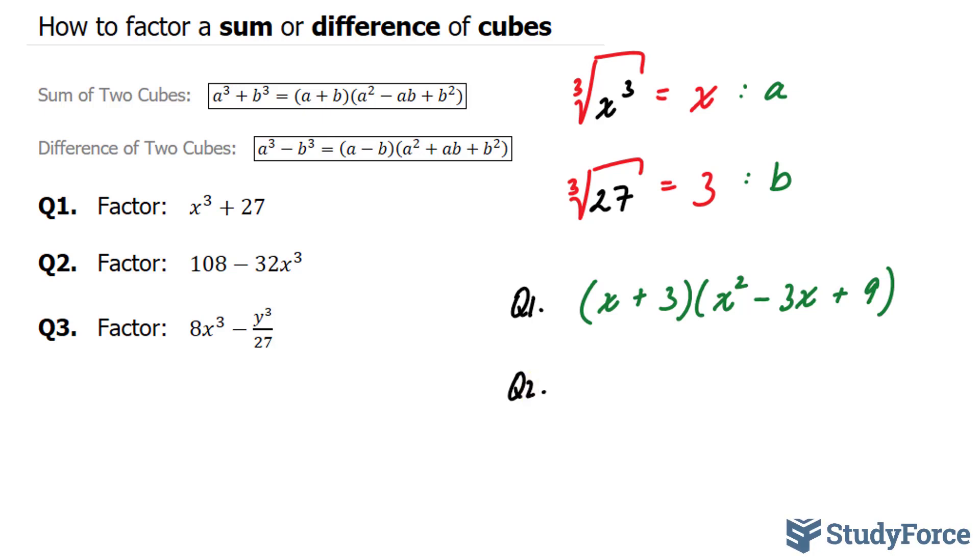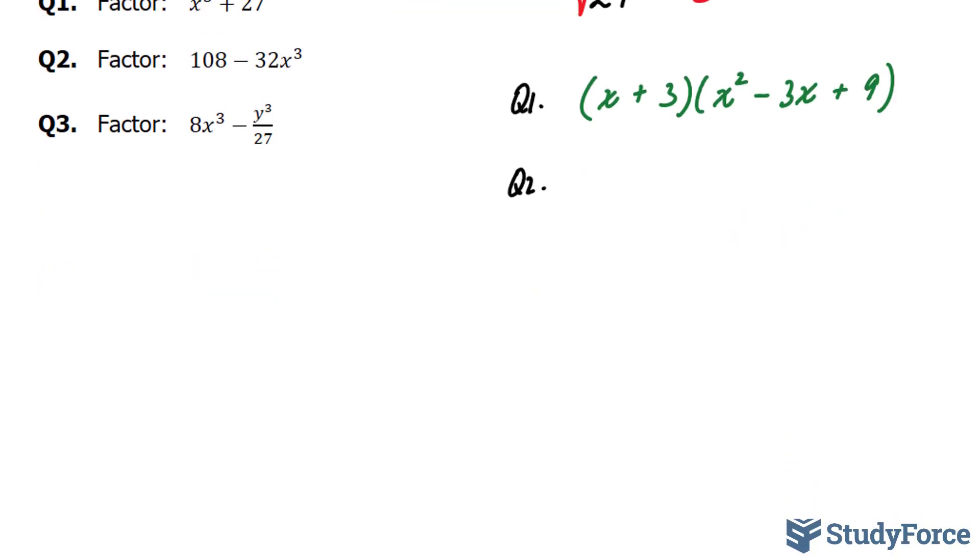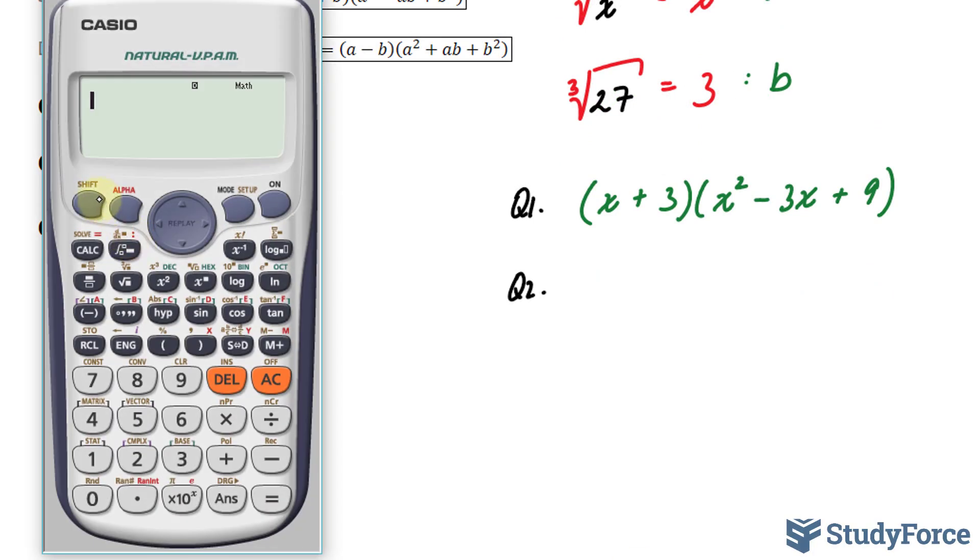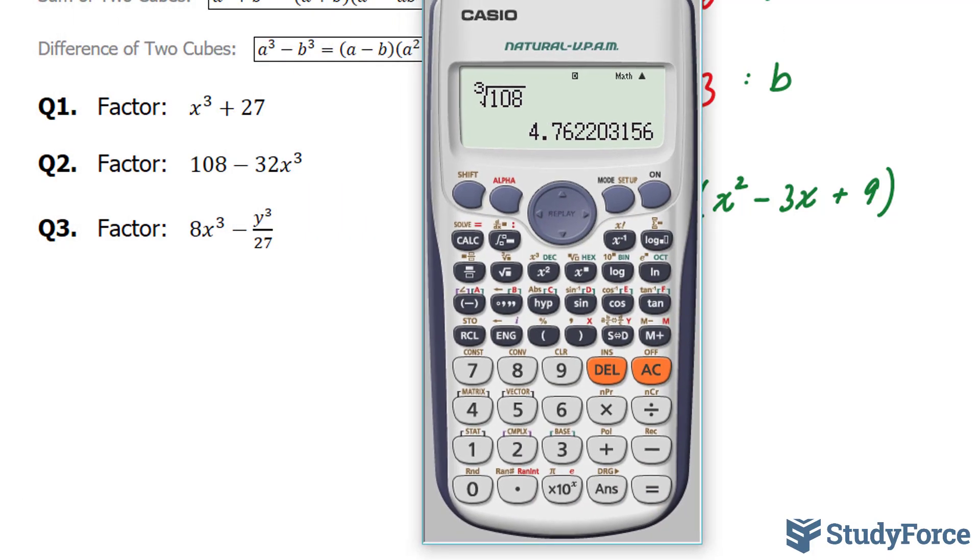Once again, we will test to see if these are two cubes, starting with 108. I'll use my calculator for this. The cube root of 108 is not a perfect cube, apparently. And similarly, the cube root of 32 is also not a perfect cube.